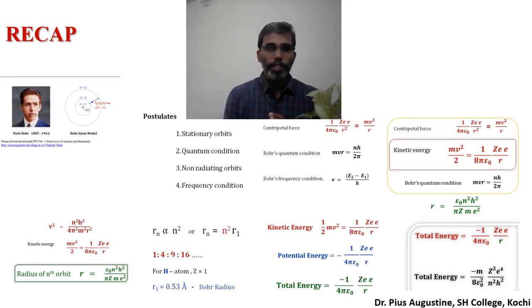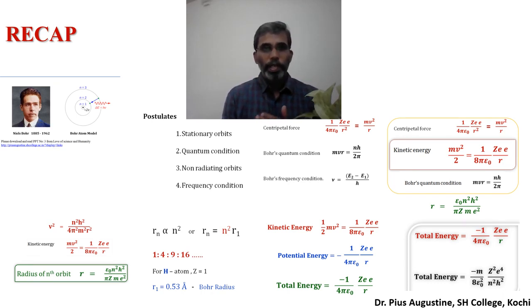Rutherford's atom model also failed to explain the hydrogen atom spectrum. So Bohr modified the Rutherford planetary atom model by incorporating quantum principles. He postulated certain concepts, which we call the postulates of the Bohr atom model. The first one is stationary or non-radiating orbits. Then we have the quantum condition: Mvr = n(h/2π), that is, the angular momentum equals an integral multiple of h/2π.